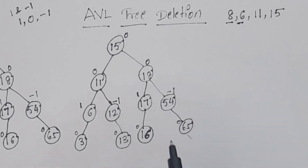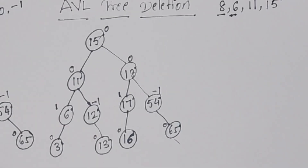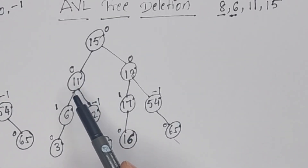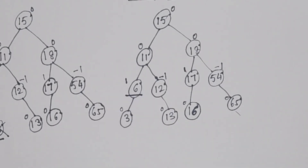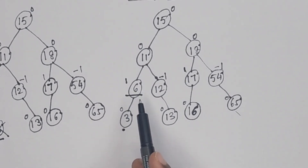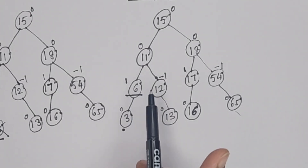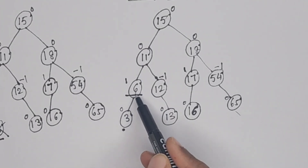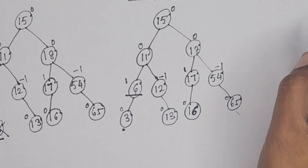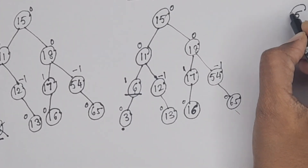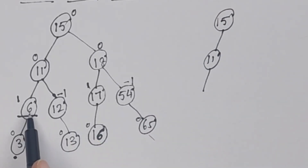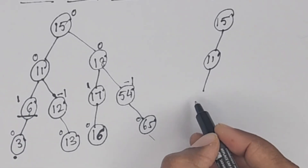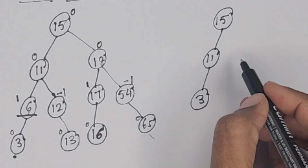The next element to delete is 6. First, we have to find it: 6 is less than 15, less than 11, and here it is. Now we have to remove 6. Node 6 has one child — a left child. If a node has only one child, we replace the node with its child node. So 6 is replaced with 3. The remaining nodes stay as they are.